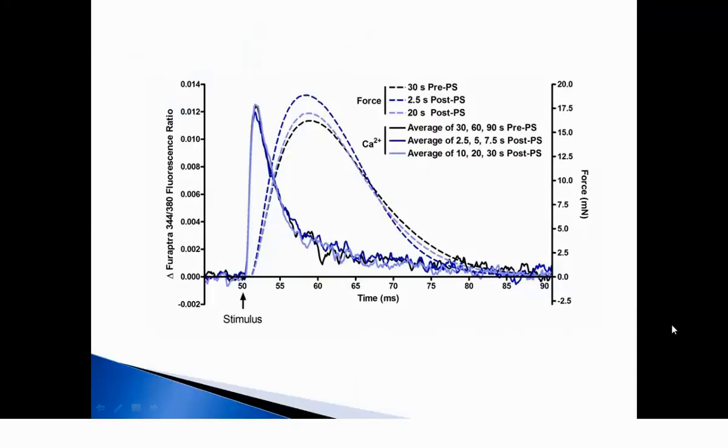Looking now at the fura-4F-derived calcium transients, which are shown as the peaks on the left-hand side of the screen in solid lines, we see no differences in either the amplitude or the shape of the calcium transient following the potentiating stimulus. This is in stark contrast to the large changes that we see in the force records, shown here as dotted lines. If you recall, we see higher force and faster kinetics in the potentiated state. Therefore, calcium transients can't mechanistically be explaining what's happening to the force records during potentiation.